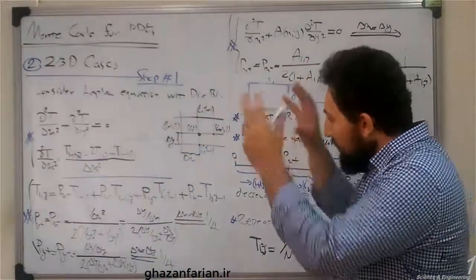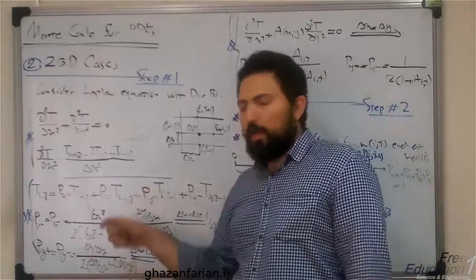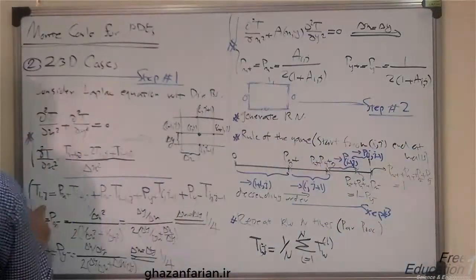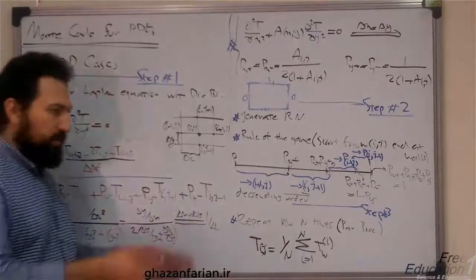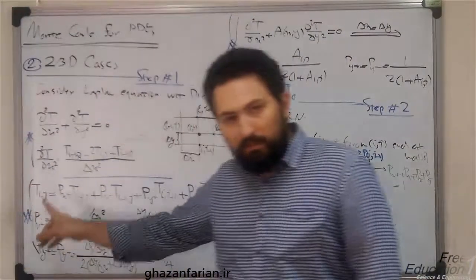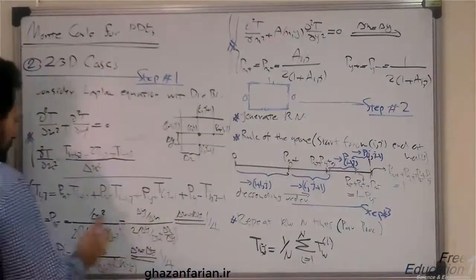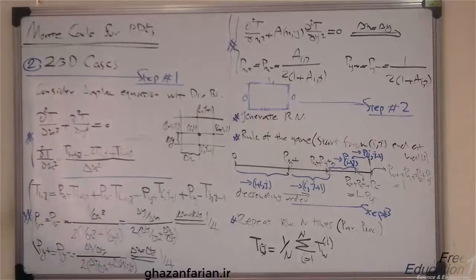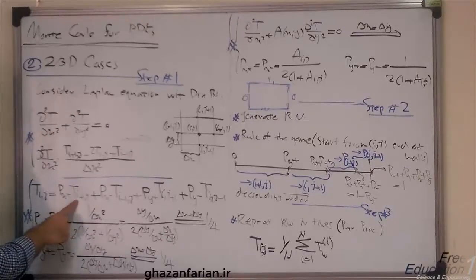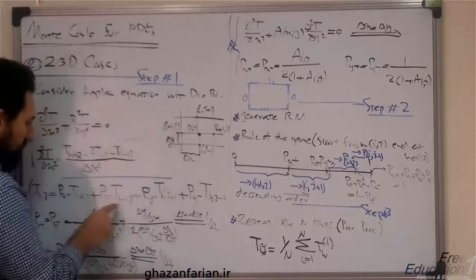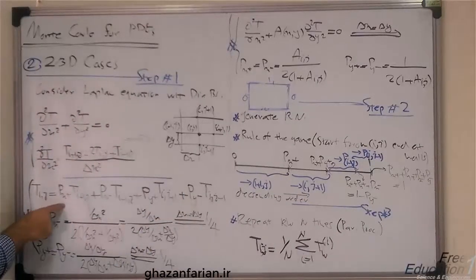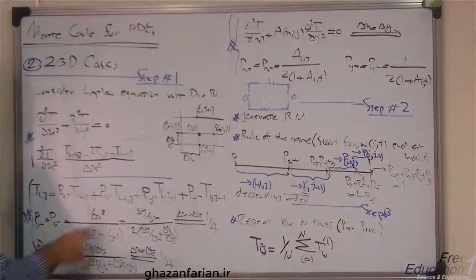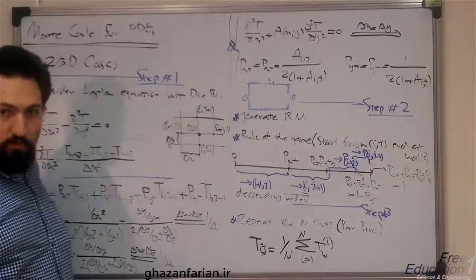After rearranging terms, the partial differential equation is transformed into a framework where the unknown function at the central point i,j is on the left-hand side with a coefficient of one. The neighboring points are on the right-hand side: T sub i+1,j (right point), T sub i-1,j (left point), the upper point, and the lower point. The coefficients are p sub x-plus, p sub x-minus, p sub y-plus, and p sub y-minus in the two-dimensional case.